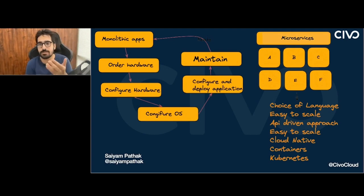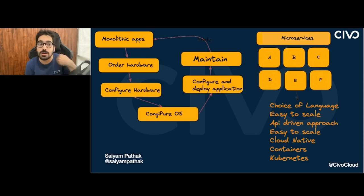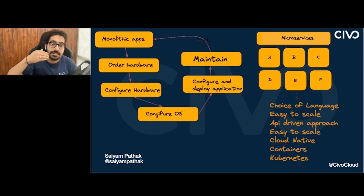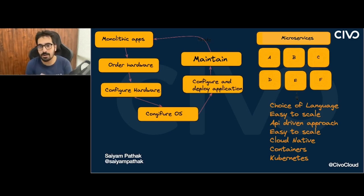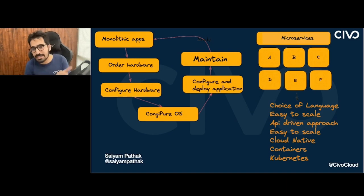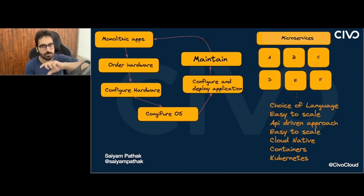Obviously, you order the hardware, configure the hardware — the most tricky part — install the operating system, configure it, then configure the dependencies for your application, run the application, and maintain it. It comes with a lot of drawbacks. If you want to update any application, you have to redeploy the entire stack. If you want to update just the user signup page, you have to redeploy the entire stack.